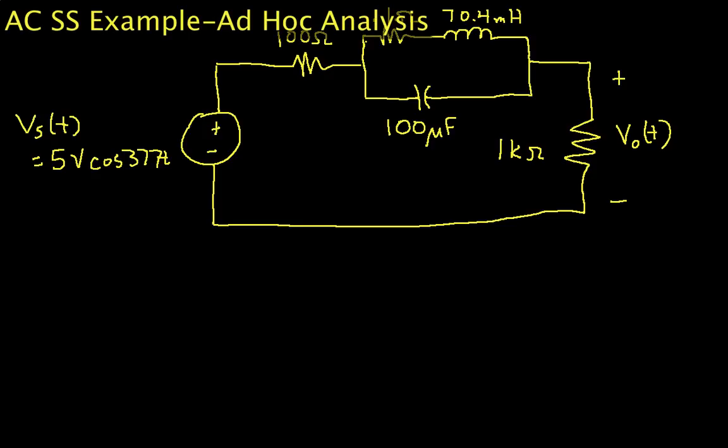Welcome to this video in which we use AC steady-state analysis to find an output voltage given a sinusoidal input voltage. This will be an ad hoc analysis in the sense that we will end up using equivalent impedances and voltage dividers to get the answer. You can see the circuit that we have.